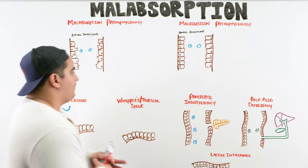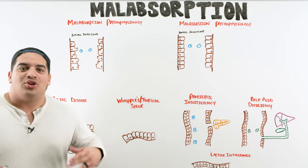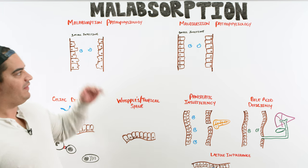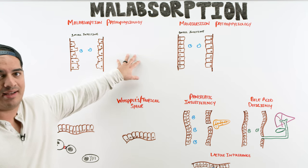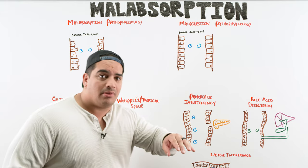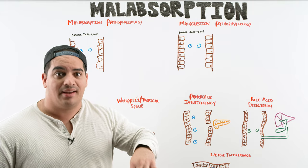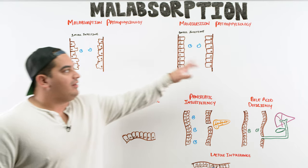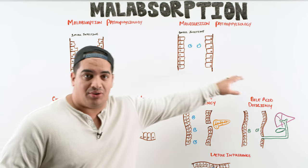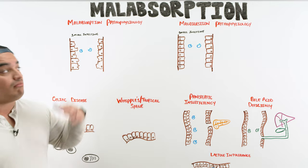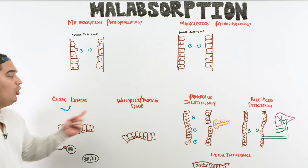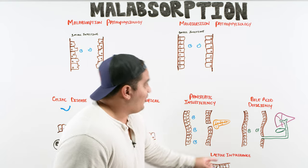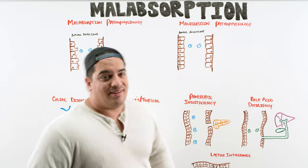When talking about malabsorption, there are actually two different types of processes. Malabsorption itself is a very specific pathophysiological process, but it can be very similar to another pathophysiological process called maldigestion. We need a basic understanding of the pathophysiological differences between the two, then we'll discuss the particular causes of each.